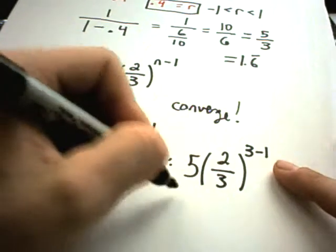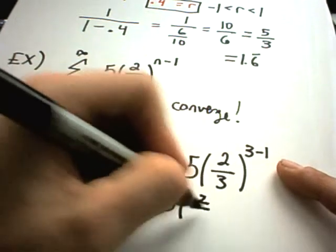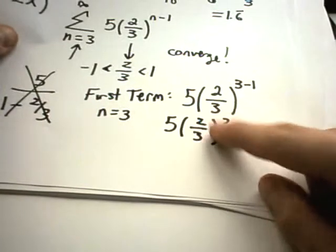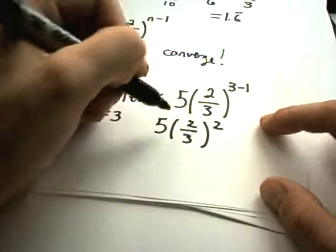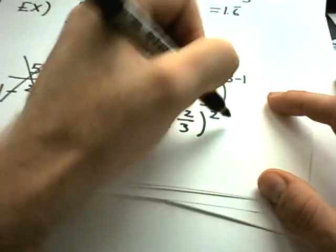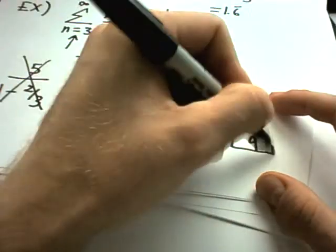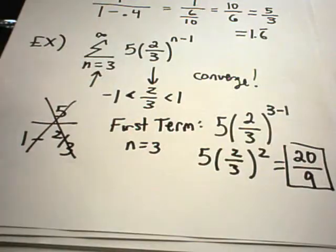Well, 3 minus 1, that's 2 thirds squared. 2 thirds squared, that's 4 ninths. So I'll get 5 times 4 ninths. I'll get 20 over 9. And this is now my first term of this series.